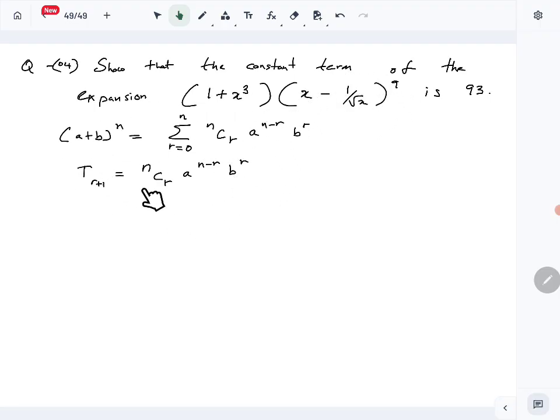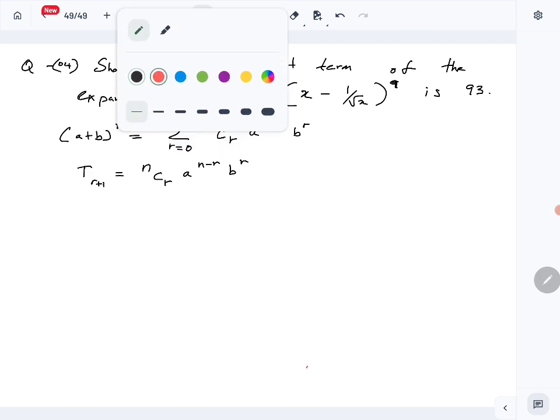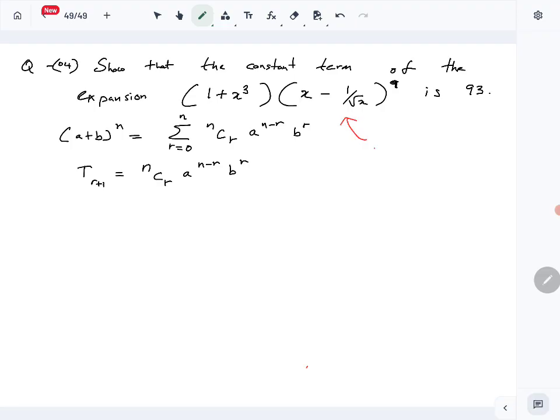So now let's focus on our expansion. This is the required theory. For our expansion we have 9th power. So let's write down our terms. From here A is X, B is minus 1 over square root X and N is 9.